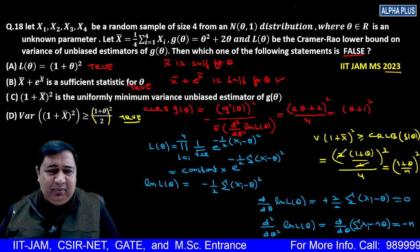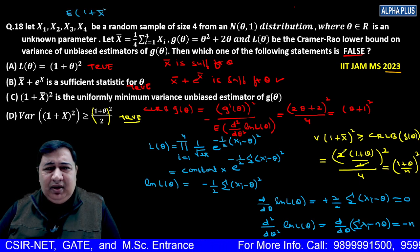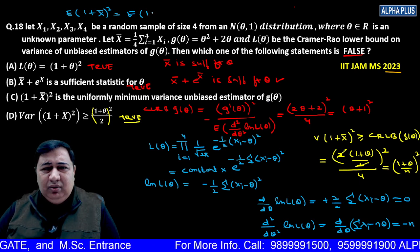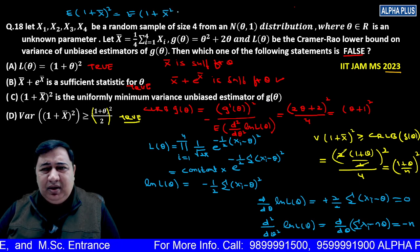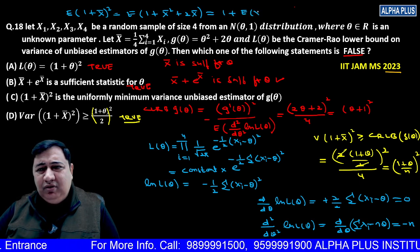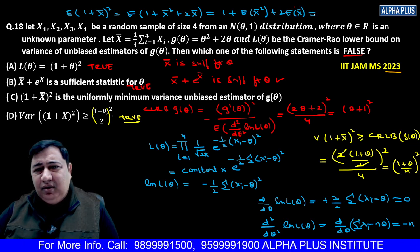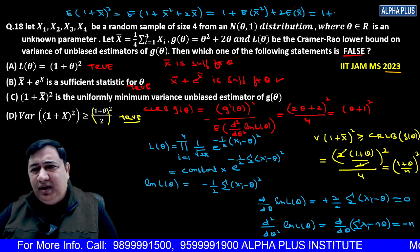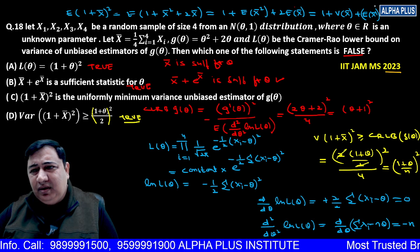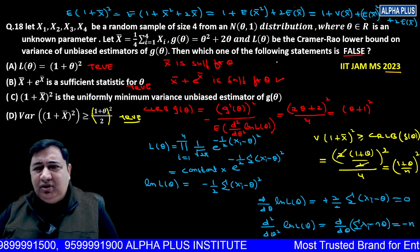We need to find expectation of 1 plus X-bar squared, and compare it with g(theta), which is whatever function of theta we get. So 1 plus X-bar square plus 2 X-bar. Now apply: one plus expectation of X-bar squared plus two expectation of X-bar, which is one plus variance of X-bar plus expectation of X-bar squared plus two expectation of X-bar.